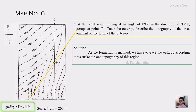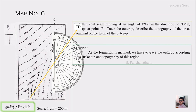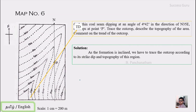We label this line TD for true dip direction, and mark the reference line as N so we don't get confused later. Since the relationship between true dip and strike is 90 degrees, we can derive the strike from the true dip. Using the protractor again: 35 degrees plus 90 equals 125 degrees, so we mark 125 degrees and draw a line from there to point P. This is the very first strike line of this map — note we are drawing the strike, not the outcrop yet.